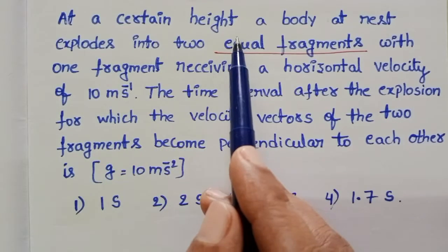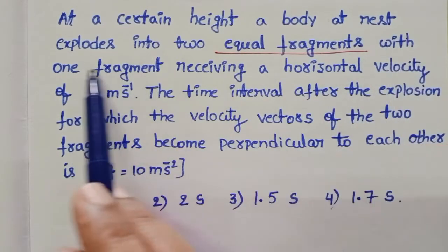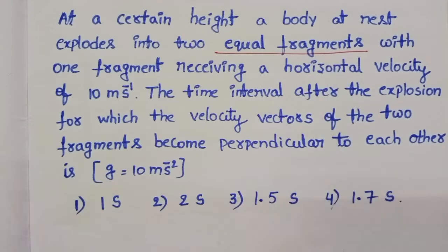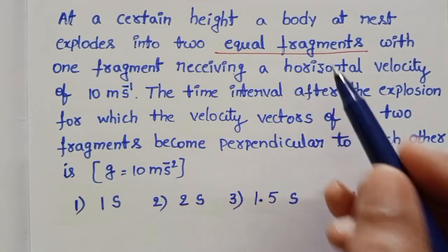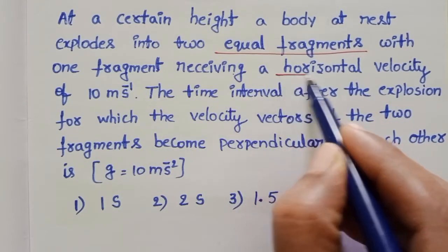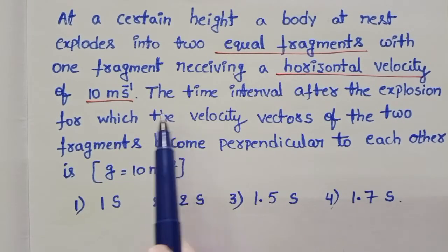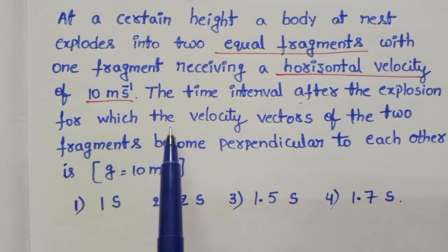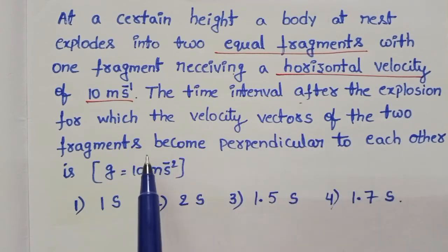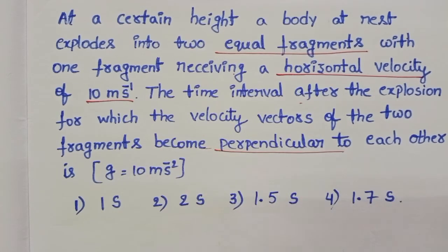At a certain height, a body at rest explodes into two equal fragments, with one fragment receiving a horizontal velocity of 10 meters per second. The time interval after the explosion for which the velocity vectors of the two fragments become perpendicular to each other is to be found.